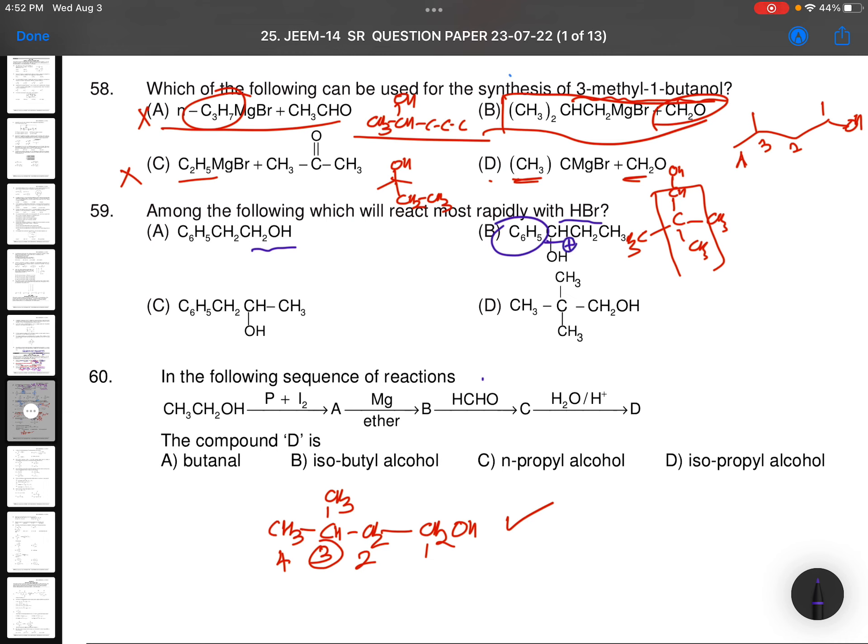That means this carbocation is going to be much more stable. It is again secondary alcohol but not so stable. This is primary alcohol. So your option must be B.